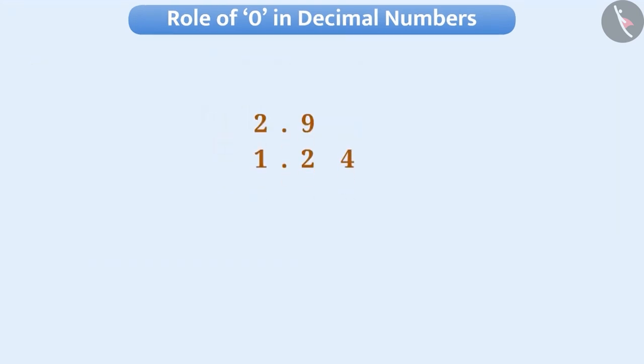Zero has a greater importance in decimal numbers. If there is no digit at any place, then zero is used as a placeholder. With the help of zero, digits are written at their correct places.